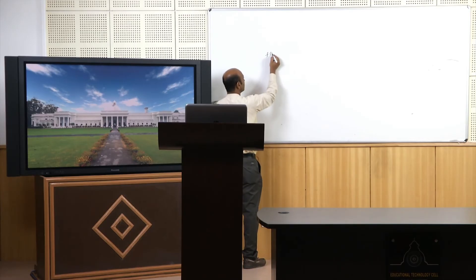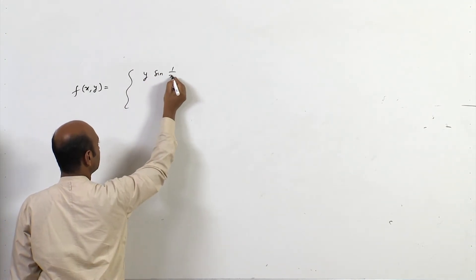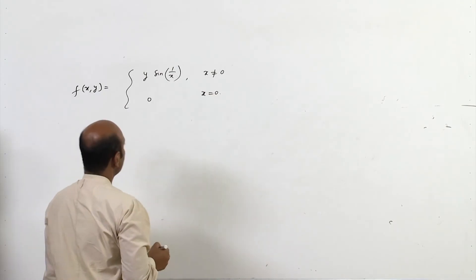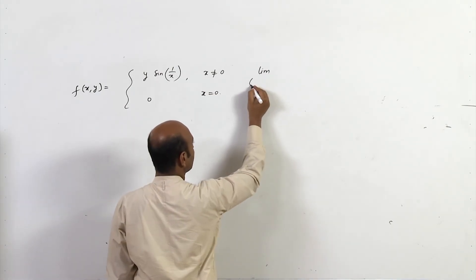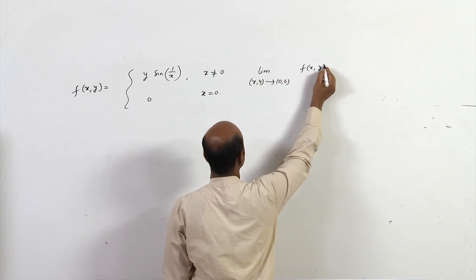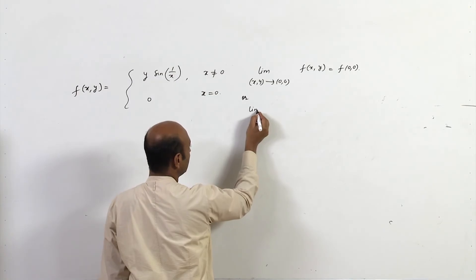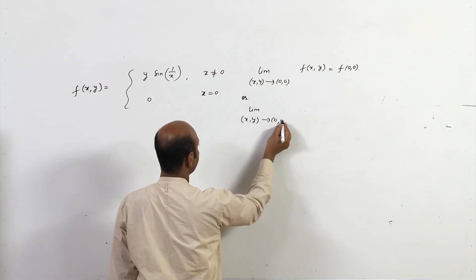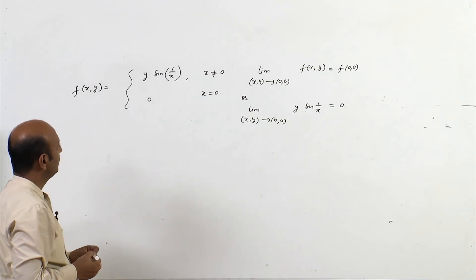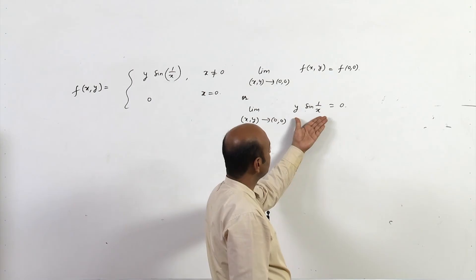Another example is f(x,y) = y·sin(1/x) where x ≠ 0, and 0 where x = 0. We check whether the limit as (x,y)→(0,0) of f(x,y) equals f(0,0) = 0. When x = 0 the value is 0.